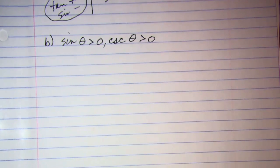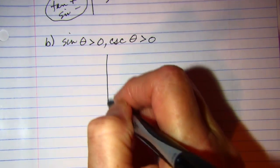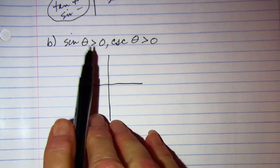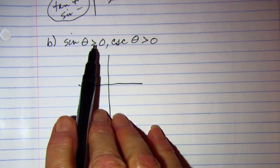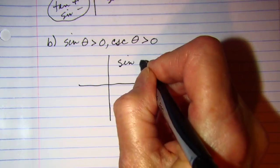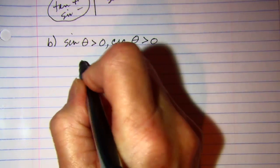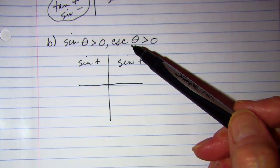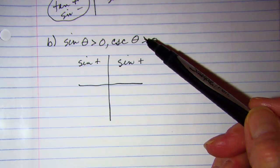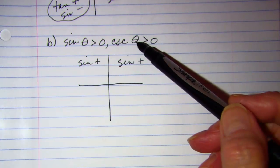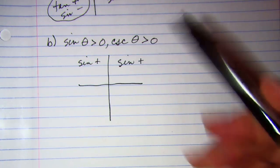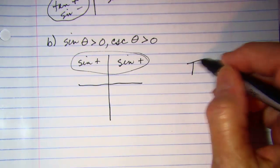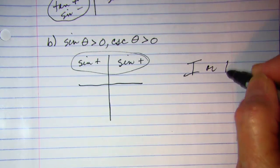Look at this one. We'll draw our coordinate plane. I want my sine to be positive. The sine is positive in the top two quadrants. Cosecant is the reciprocal of sine, so we're saying cosecant is positive also. So that would just be in these two. So quadrant one or two.